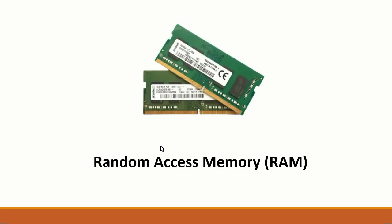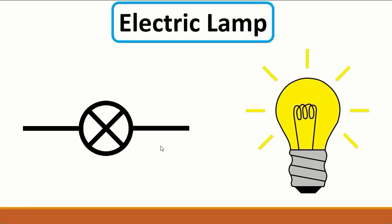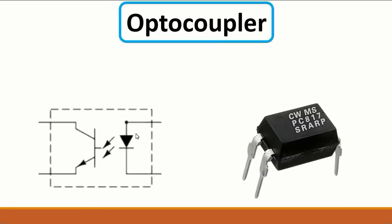If you want to check whether the RAM is the failed component, you can simply replace it with another RAM — it's not like integrated circuits or other soldered components. Next we have the electric lamp and its symbol. After that, a very important component: the optocoupler, which is used in power electronic circuits. You won't find an optocoupler on laptop or computer motherboards, but there are other components that serve the same role.